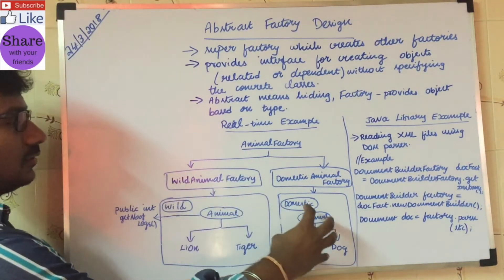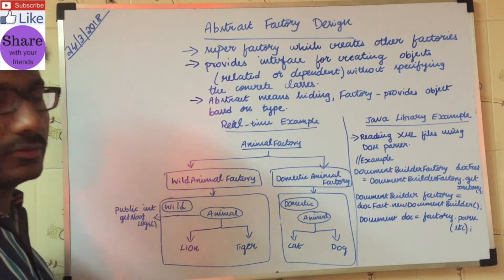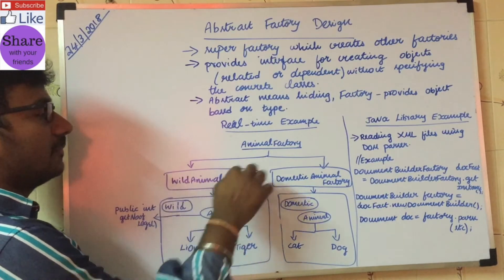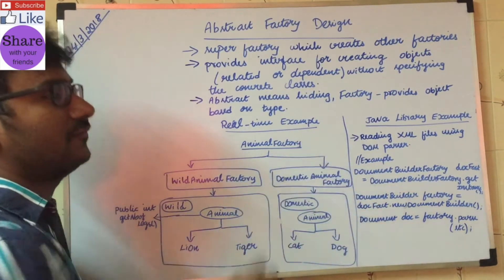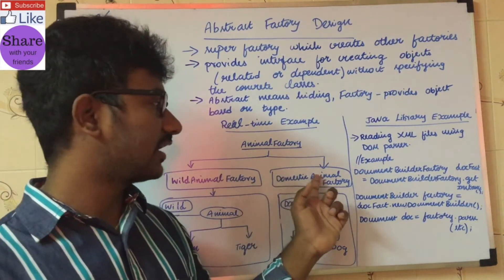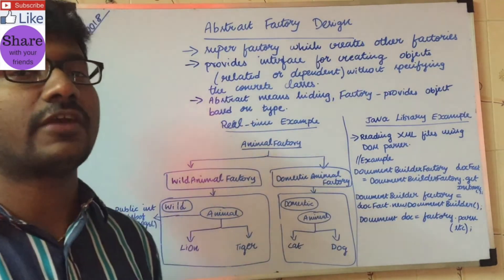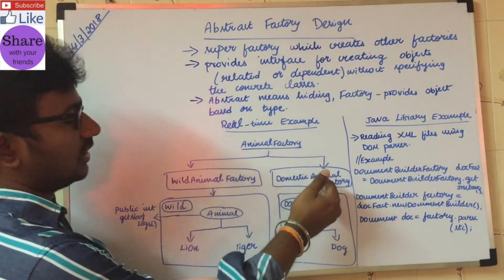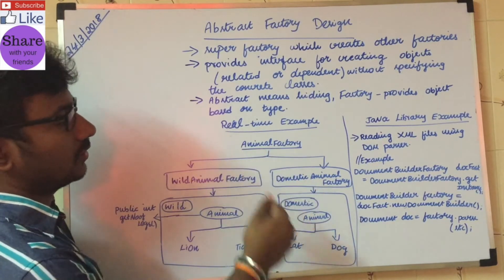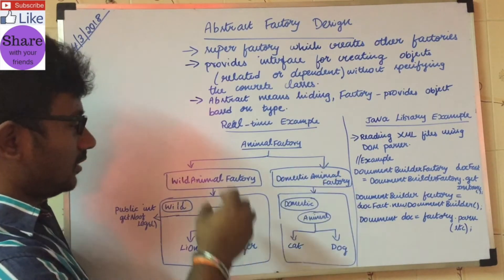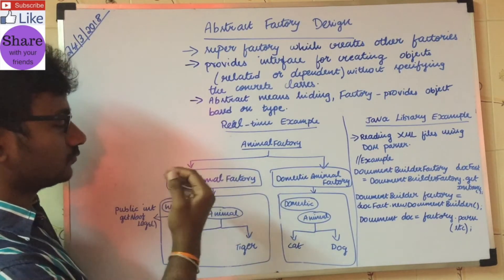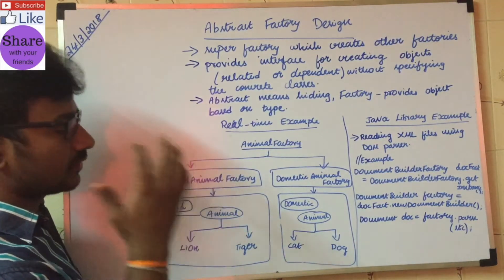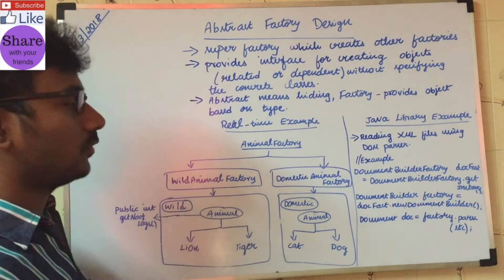So we have domestic animals and wild animals. This is the Wild Animal Factory and the Domestic Animal Factory. In the Domestic Animal Factory, you create Cat objects and Dog objects. In the Wild Animal Factory, you create lion or tiger — a four-legged, five-legged, or six-legged animal.